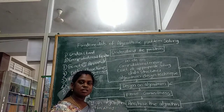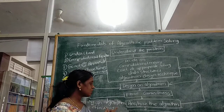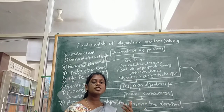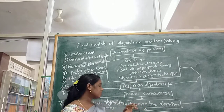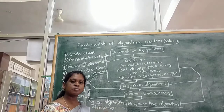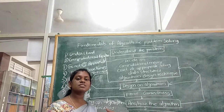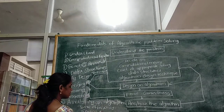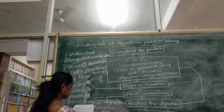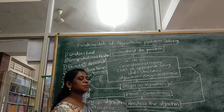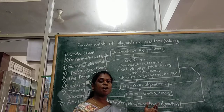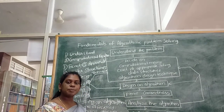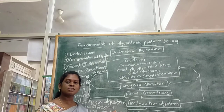If the algorithm takes a short time to execute, its efficiency is good. If it takes a long time, the efficiency is not good. Space efficiency means how much space is needed to store the algorithm. If it takes less space, its efficiency is good.